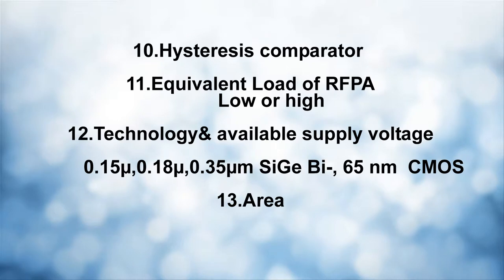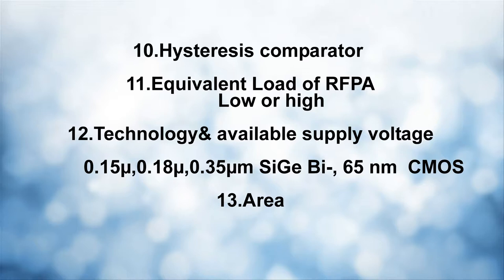If using a split-stage tracker, another very important parameter is what sort of hysteresis comparator is used, since it controls the switching of the switching-mode amplifier. The nature of the load on the envelope tracker also determines many design parameters. The available technology and supply voltage are also critical — ideally around 5V, since 3.3V makes design very hard. Technologies range from 150nm, 180nm, 350nm, SiGe BiCMOS, to 65nm CMOS.